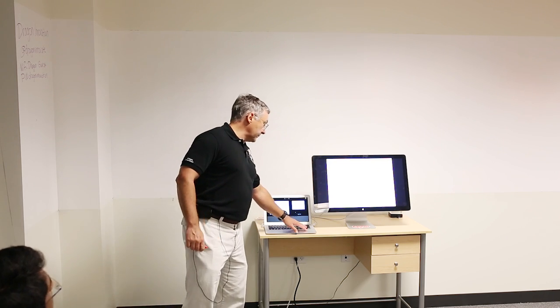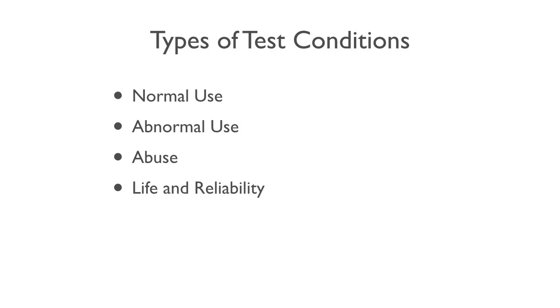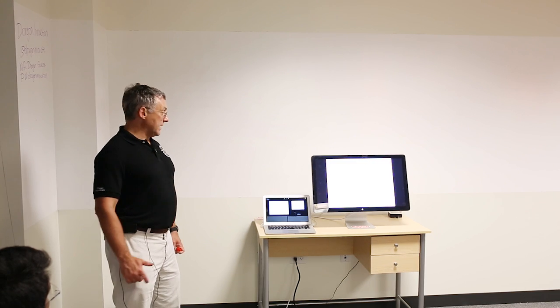So they're really two fundamentally different challenges. When you test, you test under a number of different conditions. There's normal use — that's pretty obvious. Does the vacuum cleaner vacuum? Abnormal use: will it vacuum up nuts and bolts? There's abuse: I get mad and throw it down the stairs, what happens then? And then life and reliability: will it run long enough that my warranty return rate is low enough?